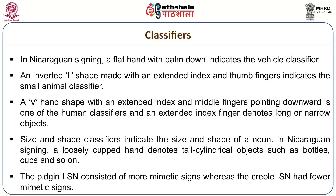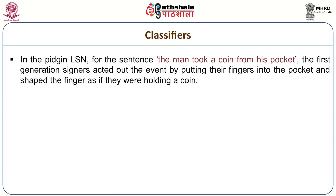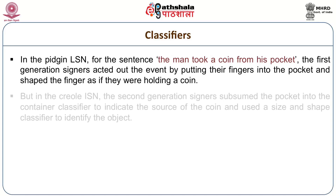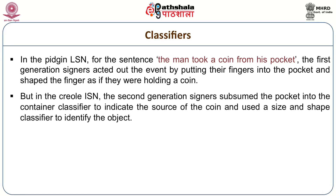The pidgin LSN consisted of more mimetic signs whereas the creole ISN had fewer mimetic signs. For example, for the sentence 'the man took a coin from his pocket', the first generation signers acted out the event by putting fingers into the pocket shaped as if holding a coin. But in the creole ISN, the second generation signers used a container classifier to indicate the source of the coin and a size and shape classifier to identify the object.